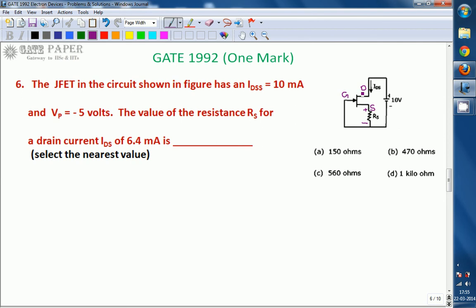Always the current which enters the drain leaves the source. That implies drain current is same as source current, generally represented as ID or IDS. The same amount of current also flows through this RS. The voltage drop across this one is IDS into RS.